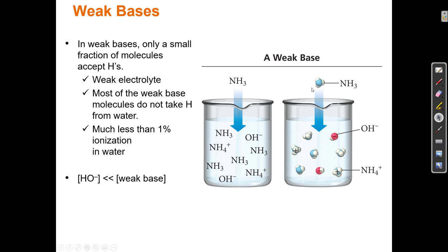A weak base only makes a little bit of OH-. A strong base makes 100% OH-, while a weak base makes much less — maybe 5%. A weak base generally does not contain OH. If a base has OH in it, it's almost always strong. NH3 doesn't have OH, so when it goes into water, it only makes a little OH-; most NH3 molecules remain unreacted.